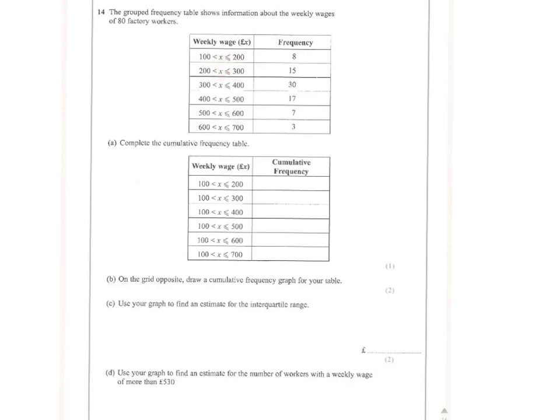Cumulative frequency always goes back to the bottom numbers. You can see all the numbers here are 100. So the first interval is exactly the same as the interval in the frequency table, so we can write in 8. But the second interval, most importantly, here contains the first two from the frequency table. So that's 8 plus 15 is 23.